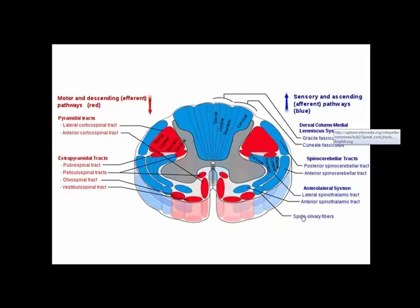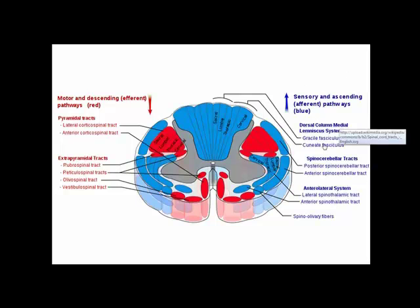If we look at the white matter of the spinal cord, we can see where some of these tracks are located. We're going to look at both ascending and descending tracks. You'll see there are a lot of tracks, but we're just going to look at a few. We're going to start with the ascending tracks.